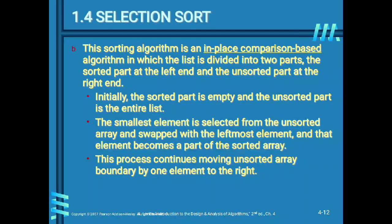Initially the sorted part is empty and the unsorted part is the entire list. The smallest element is selected from the unsorted array and swapped with the leftmost element, and that element becomes part of the sorted array. This process continues, moving the unsorted array boundary one element to the right. This concept is not suitable for large data sets.